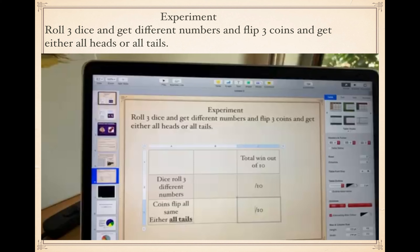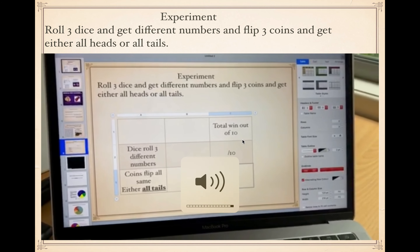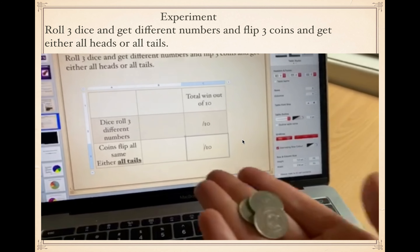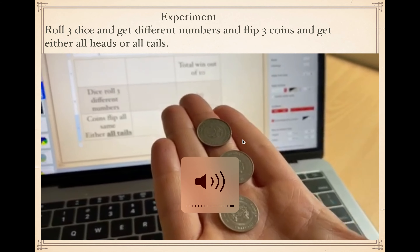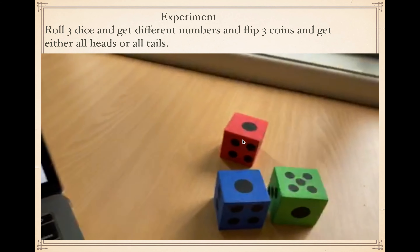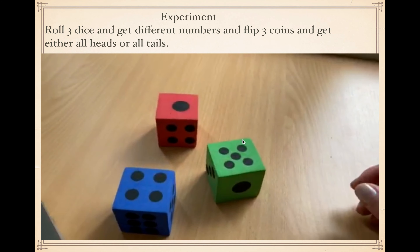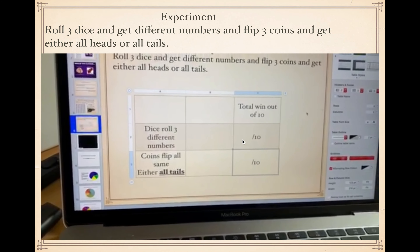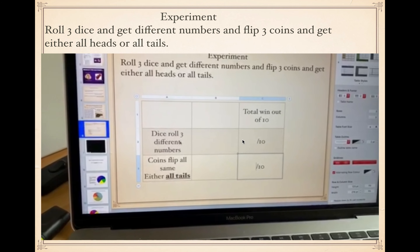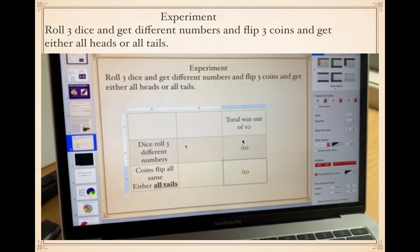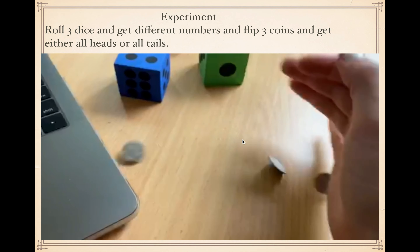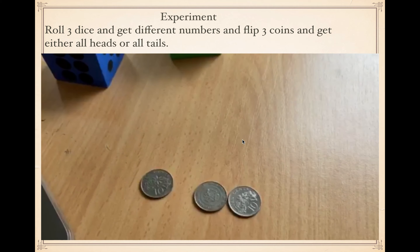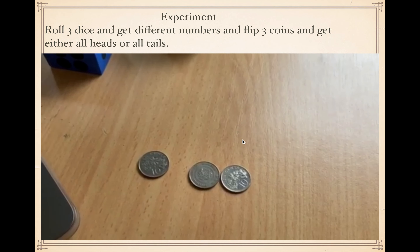Let's look at this video and see what happened. We're going to do an experiment: tossing three coins and seeing if you can get all the same — either all heads or all tails — or rolling dice and getting all three different numbers. I'm going to record wins out of 10 total for both separately. To save time I might do these at the same time. First roll — we can see zero for coins because we have two tails and one head.